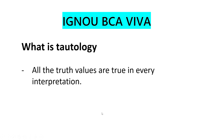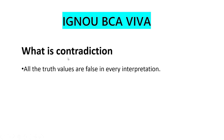What is Tautology? In Tautology, all the truth values are true in every interpretation — no matter what happens, all truth values remain true. What is Contradiction? In Contradiction, all the truth values are false.